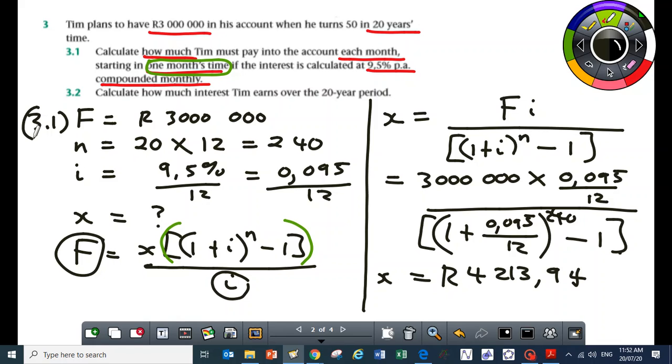Question 3.2 says calculate how much interest Tim earns over the 20 year period. Before I carry on, I just want someone to tell us how you do 3.2. I don't want to rush to just give you solutions.